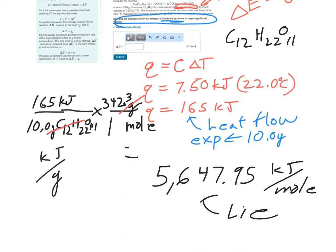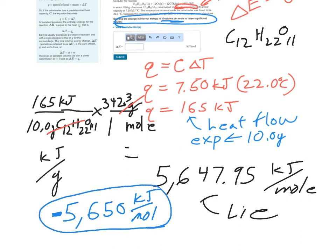We go back up here and do a sig figs check and I am seeing three sig figs right here, three sig figs right here so our answer should have three. So our answer after sig figs, and here's where the kicker is, it's going to be a negative 5,600. Why this negative sign?